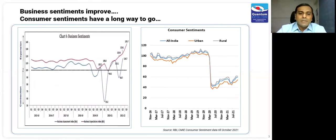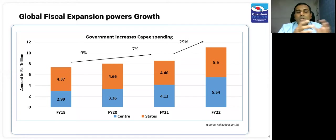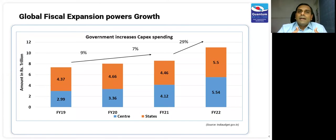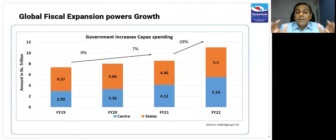Why do we believe India is on the cusp of a revival? First, India has expanded fiscal deficit. After COVID, every government has expanded fiscal deficit — spending more to support people's incomes and businesses — resulting in economic growth recovery. The government has said the fiscal deficit will remain at 4.5% of GDP till FY26, as against the initial target of 3 to 3.5%. That is almost $1 to $1.5 trillion of spending over the next five years.